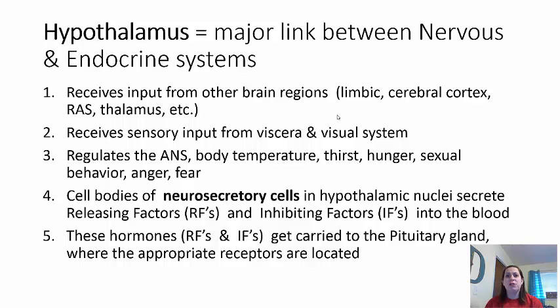The hypothalamus also receives sensory input from the viscera — the internal organs — constantly getting information about what's going on internally, as well as receiving information from the visual system. This area also regulates the ANS, the autonomic nervous system. Because of this, the hypothalamus helps with homeostasis: body temperature, thirst, hunger, sexual behavior, anger, fear, and similar functions.